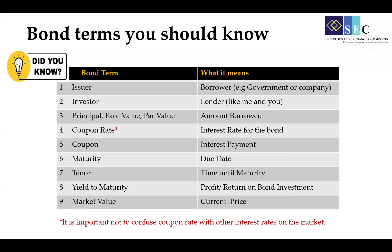One important thing to emphasize is not to confuse the coupon rate with other interest rates on the market. For example, a bank's lending rate might be 26%, but the coupon rate is an interest rate specific to that bond security. Different securities have different coupon rates tied to them. This coupon rate can either be fixed or it can change during the life of the bond.